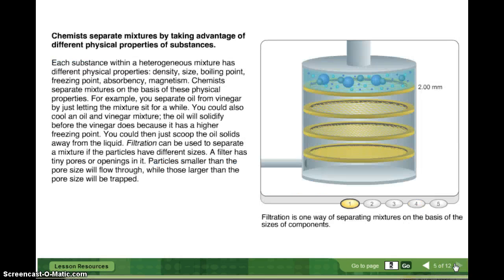Chemists separate mixtures by taking advantage of different physical properties of substances. Each substance within a heterogeneous mixture has different physical properties. For example, they have different density, size, boiling points, freezing points, absorbency, magnetism. Chemists separate mixtures on the basis of these physical properties. For example, you separate oil from vinegar by just letting the mixture sit for a while. You could also cool an oil and vinegar mixture. The oil will solidify before the vinegar does because it has a higher freezing point. You could then just scoop the oil solids away from the liquid.